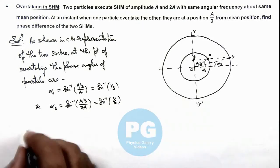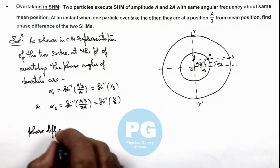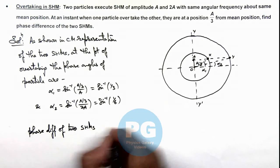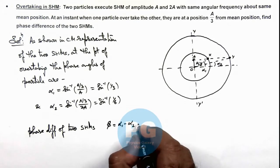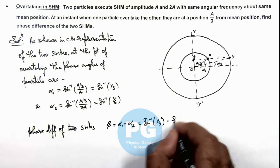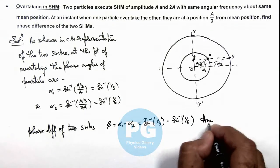Now in this situation if we calculate the phase difference of the two SHMs, this can be given as phi which is equal to alpha 1 minus alpha 2. This will be sine inverse of 1/3 minus sine inverse of 1/6. That is the final result of the problem.